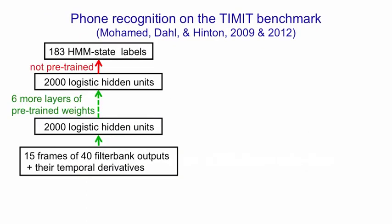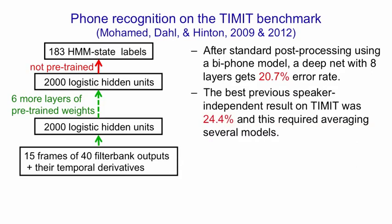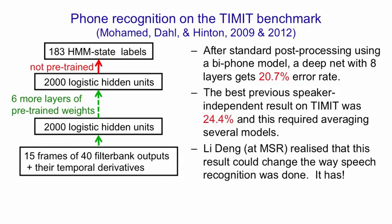You may remember this picture from the first lecture — it was one of the examples I gave of the success of neural nets. Back then I said we could get down to 20.7% by pre-training and then fine-tuning with backpropagation, and that the previous speaker-independent record on TIMIT was 24.4%, which actually required averaging several models. Lee Deng at Microsoft Research picked up on this result immediately and collaborated on improving it, and this has led to a big change in speech recognition. A Microsoft blog by the chief research officer discusses the big improvements in speech recognition caused by using deep neural nets.